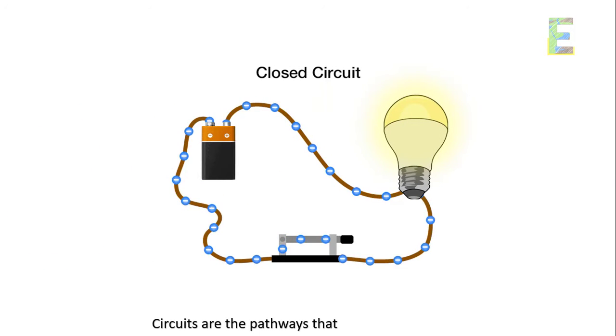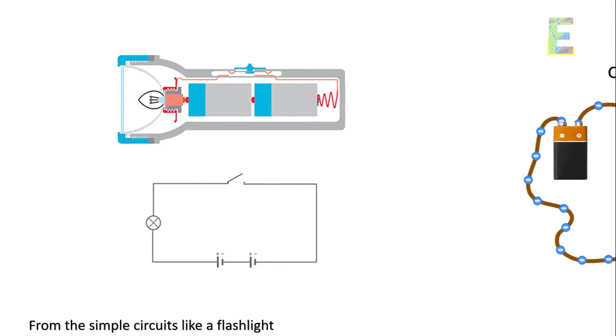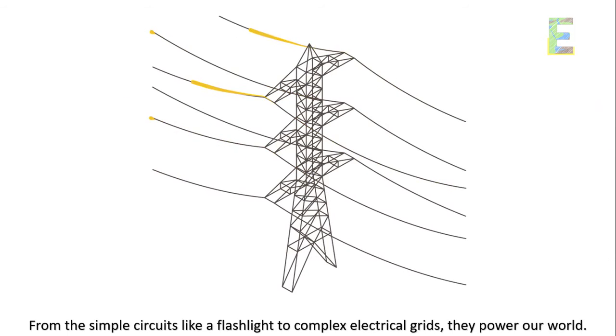Circuits. Circuits are the pathways that allow electricity to flow. From simple circuits like a flashlight to complex electrical grids, they power our world.